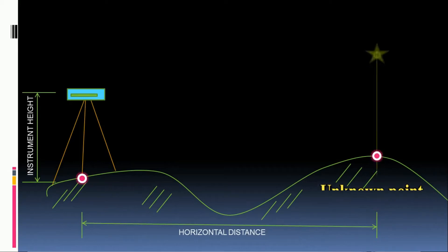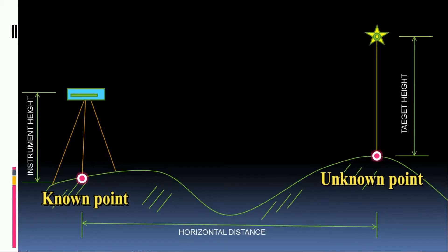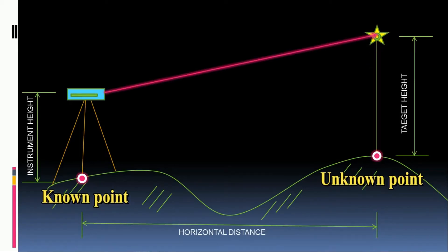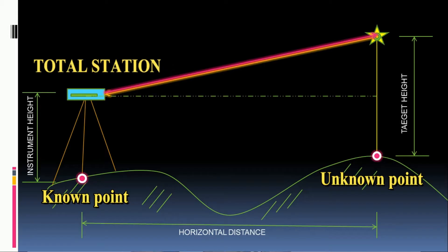The coordinate of an unknown point relative to a known coordinate can be determined by using a total station, as long as a direct line of sight can be established between two points.